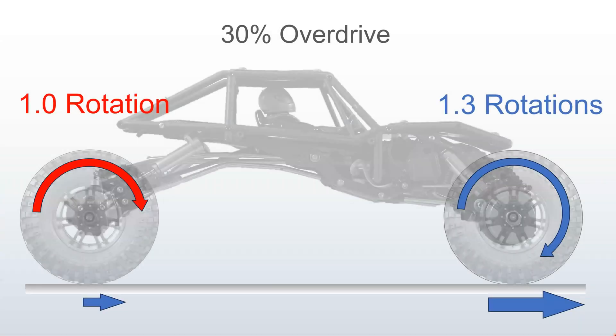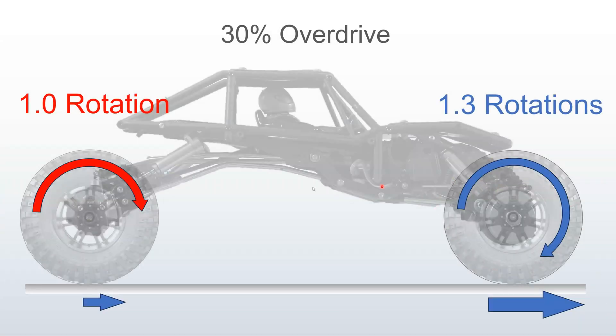You can achieve overdrive through gearing or electronically if you have dual motors. So let's review exactly what is front overdrive. If you have 30% overdrive, it means your front wheel rotates 1.3 times relative to one rotation in the rear.